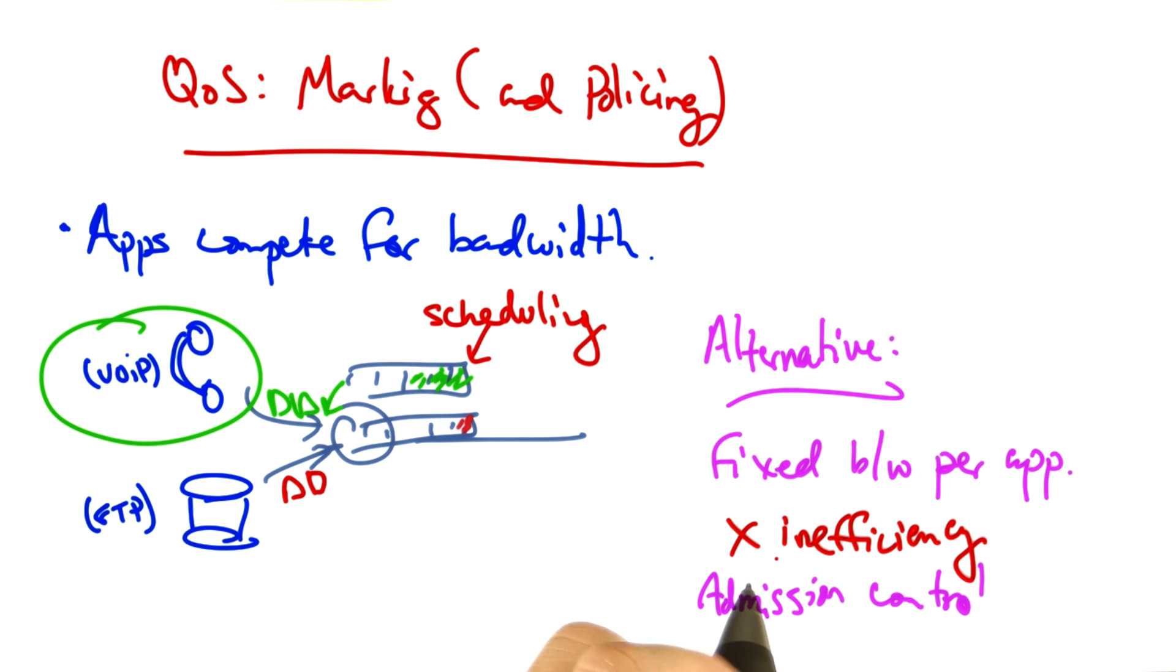Another alternative is to use admission control, whereby an application declares its needs in advance, and the network may block the application's traffic if the application can't satisfy the needs. A busy signal on a telephone network is an example of admission control. But can you imagine how annoying it would be if you attempted to load a web page and were blocked?